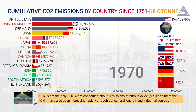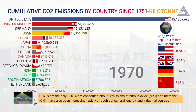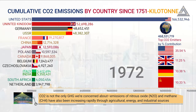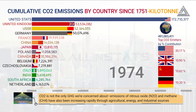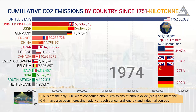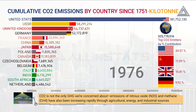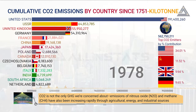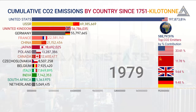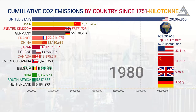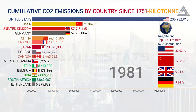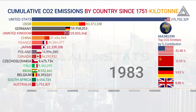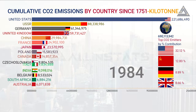Carbon dioxide is not the only greenhouse gas we are concerned about. Emissions of nitrous oxide and methane have also been increasing rapidly because of agricultural, energy, and industrial sources. Like carbon dioxide, the atmospheric concentration of both of these gases has also been rising rapidly.